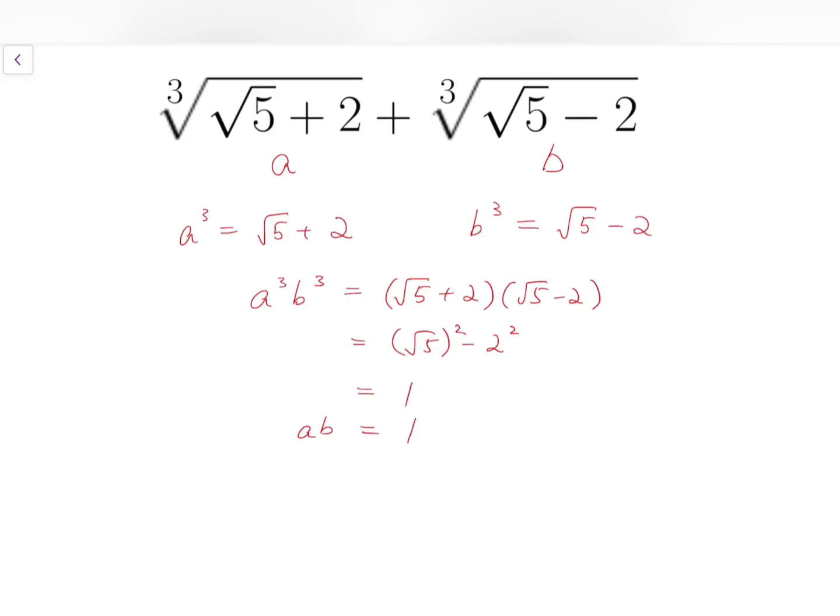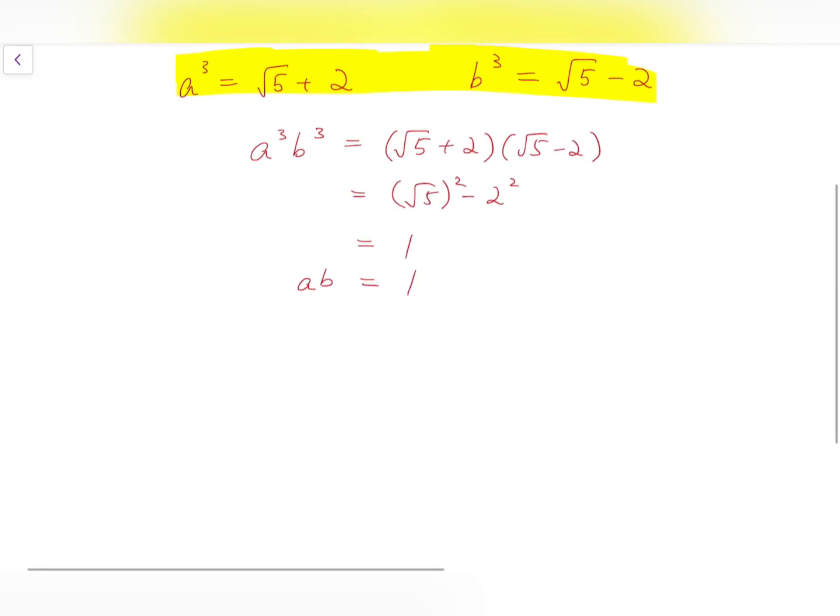And furthermore, from the results after cubing, we can see that the difference of these two numbers is 4. So we set up two equations on a and b. One is the product equals 1, while the other is that the difference of cubes is equal to 4.